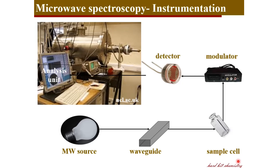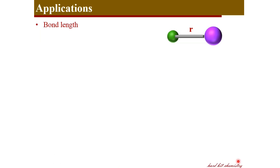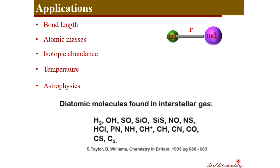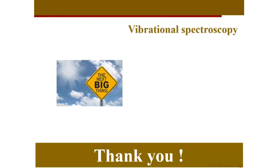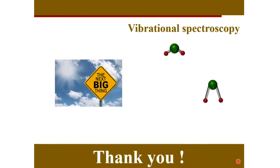The most important applications of microwave spectroscopy include calculating bond lengths or atomic masses, determining isotopic abundance, and temperature studies. It has important exclusive applications in astrophysics — a large number of interstellar gases have been identified using microwave/rotational spectrometers. The method is non-invasive, non-destructive, works for solids, liquids, and gases, including dark-colored samples, and can work with small or large amounts of sample. In the next session we will be looking at vibrational spectroscopy.